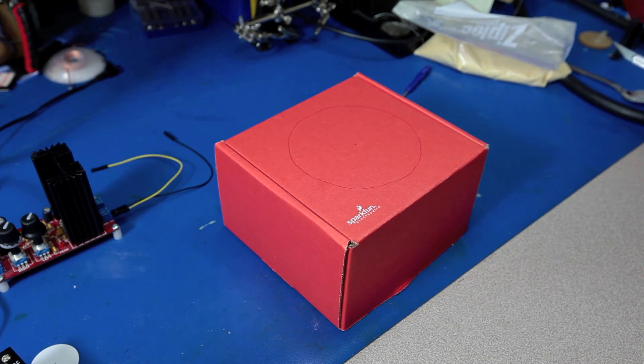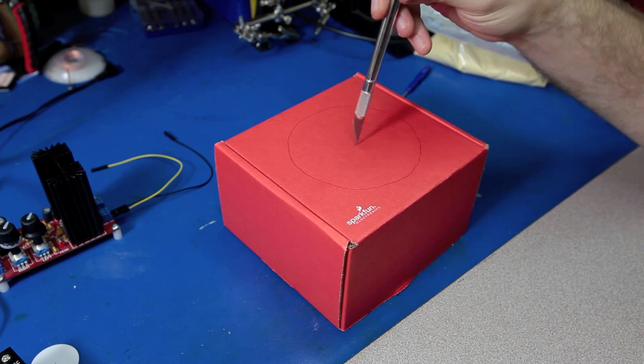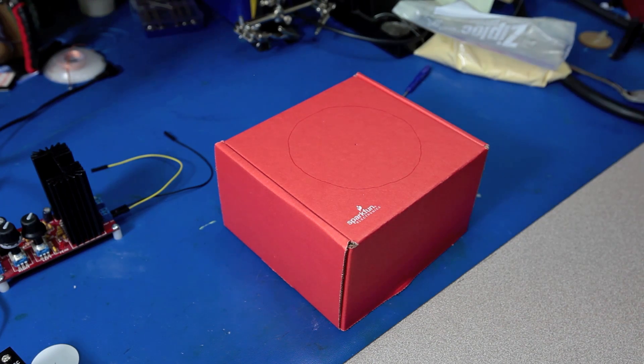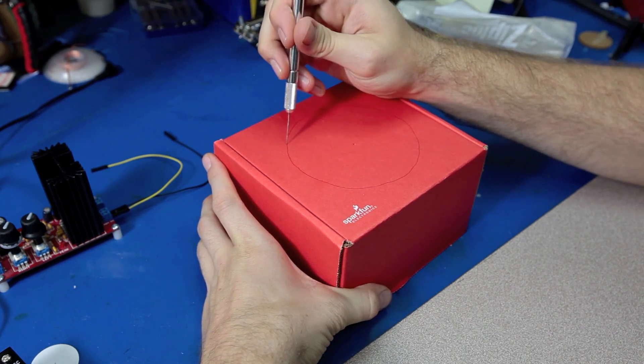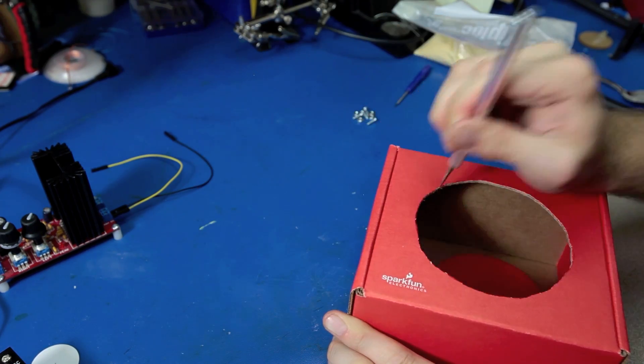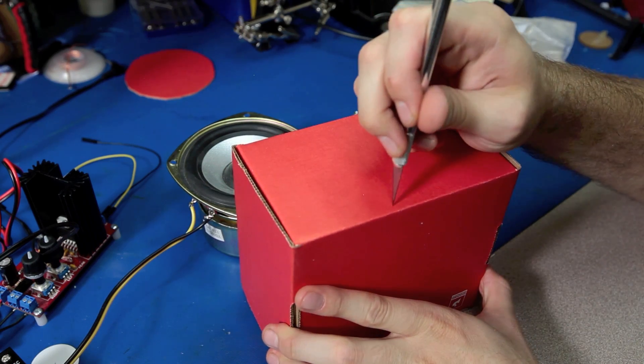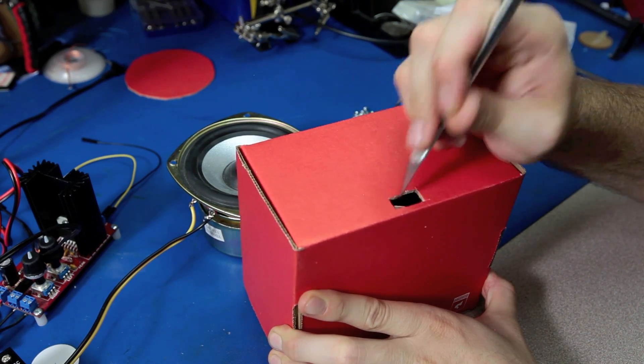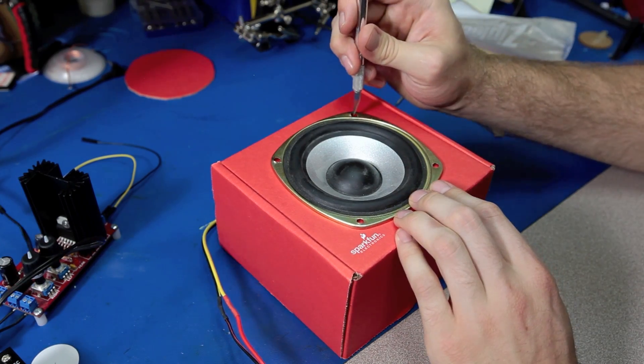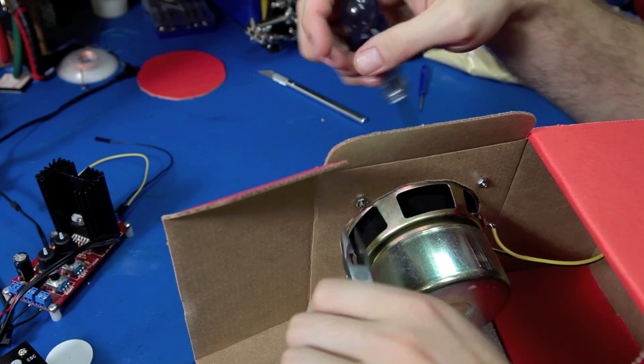While we let that dry we're going to go ahead and set up our speaker in a box. I pre-measured the speaker diameter and drew a circle here for me to cut out. So I'm just going to take an exacto knife and start that. We're also going to cut a tiny hole in the back for the wires to come through. We're going to make some holes for screws. I'm going to tighten these down.